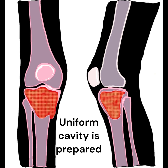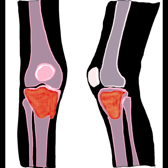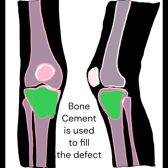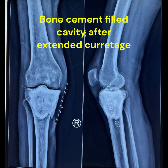After the extended curettage, the resulting bone cavity must be filled to provide structural stability. Polymethylmethacrylate (PMMA) bone cement is used to fill the cavity. Bone cement not only fills the void but also generates heat as it sets, which further helps to destroy any remaining tumor cells — a process known as thermal necrosis.